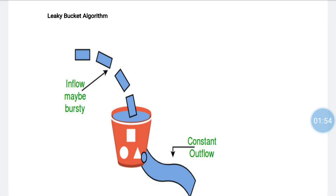A tap is pouring water into the bucket. Suppose we have a bucket in which we are pouring water in a random order, but we need water to come out at a fixed rate. For this, we make a hole at the bottom of the bucket. This ensures that water coming out is at a fixed rate, and when the bucket fills up, we stop pouring into it. The input rate can vary but the output rate remains constant.